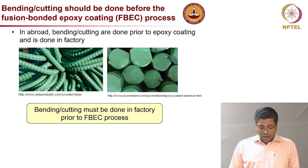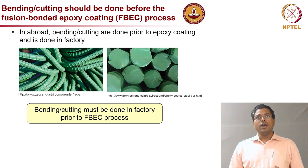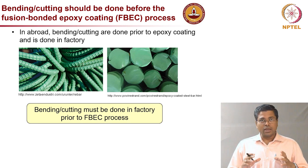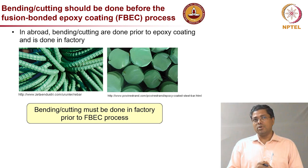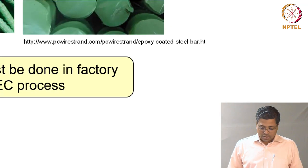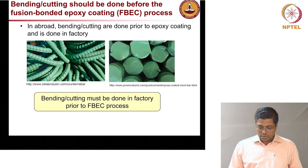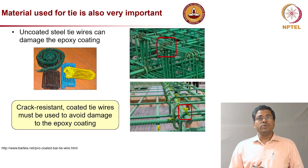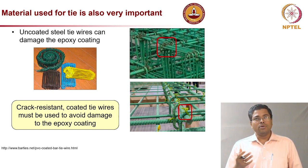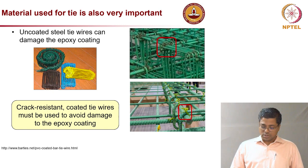Pictures from a real bridge — about five years old — show rebars corroding even without any chlorides. This reinstates that it is more dangerous to use damaged epoxy coated steel rebars than uncoated steel rebars. Ideally, these rebars should not be bent at site at all. Bending and cutting everything should be done before epoxy coating is applied. For tie wires, plastic coated tie wires should be used, not uncoated metallic tie wires.